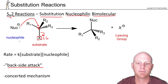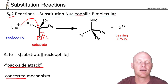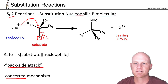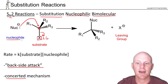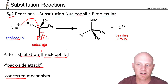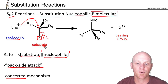Because both the nucleophile and the substrate are involved in the single rate-determining step, SN2 reactions have a concerted mechanism — the nucleophile attacks and the leaving group leaves simultaneously. Both species appear in the rate law: first order in substrate, first order in nucleophile, second order overall.